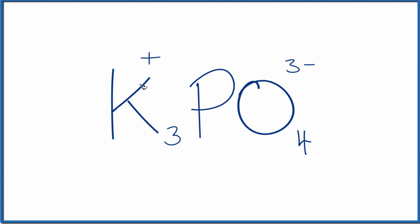So three times one plus is three plus. Then we have our three minus. Net charge is zero, just like we find in ionic compounds.